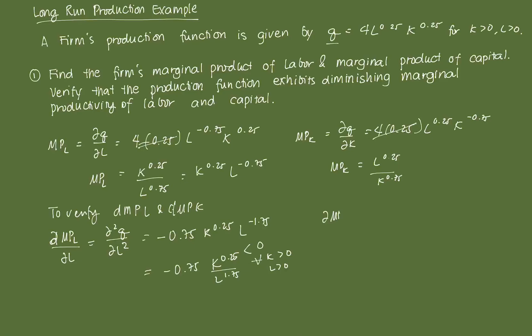We can do the same for capital: the second-order derivative of the production function with respect to K gives negative 0.75 times L raised to 0.25 over K raised to 1.75, which is also less than 0 for all K > 0 and L > 0. This implies diminishing marginal productivity of capital as well. In other words, as the firm uses more labor holding capital constant, the marginal productivity of labor decreases, and the same is true for capital.